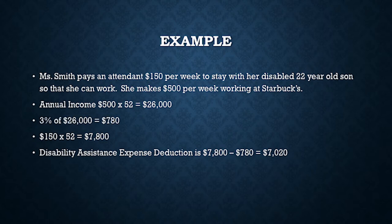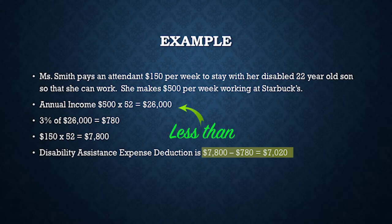Her cost for the attendant is $7,800. When we subtract $780 from $7,800, we end up with $7,020, which is less than what she's bringing home. So they would qualify for that amount as a disability assistance expense.